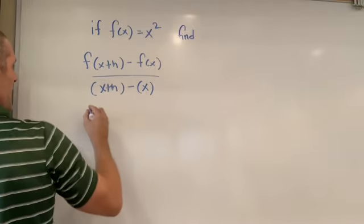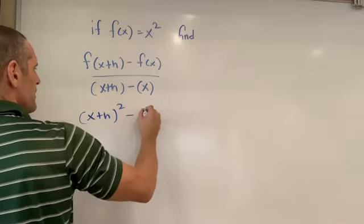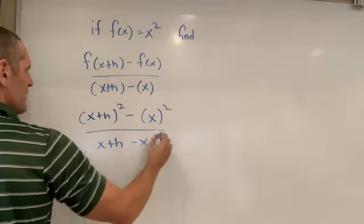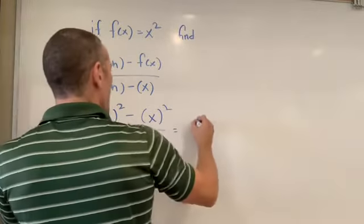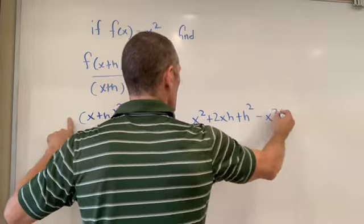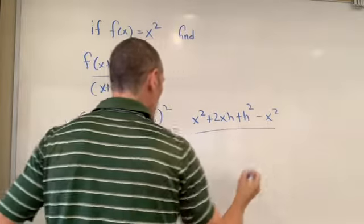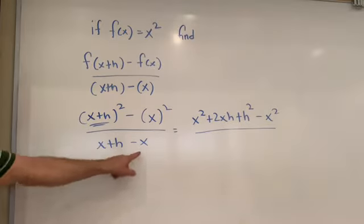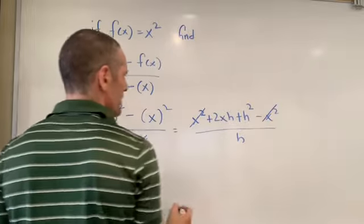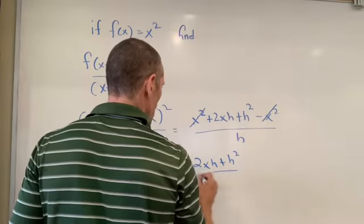f of x plus h is our input squared minus f of x, which is x squared, over x plus h minus x. Which, of course, will equal x squared plus 2xh plus h squared minus x squared. I just foiled that to get this, and I carried over the minus x squared. If I have x squared and negative x squared, they will cancel each other off and we'll be left with h.